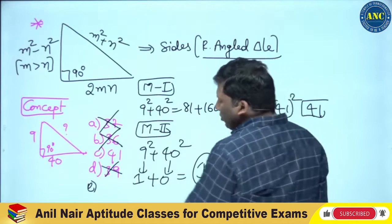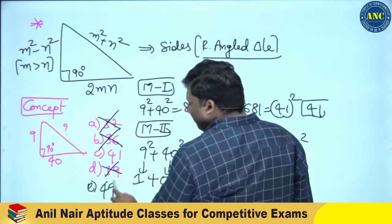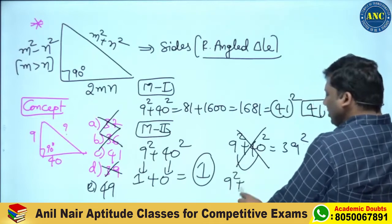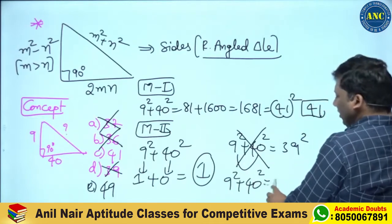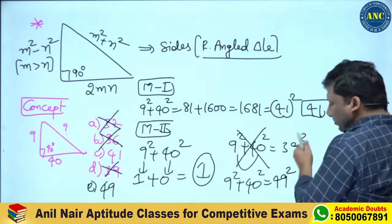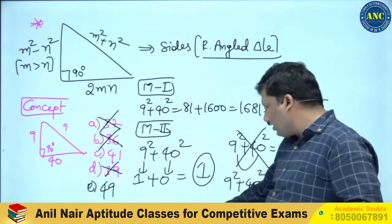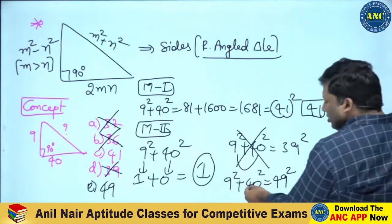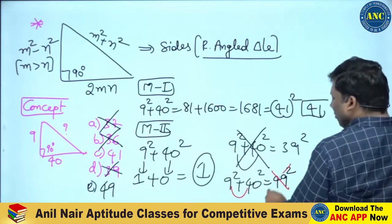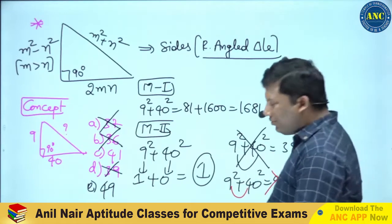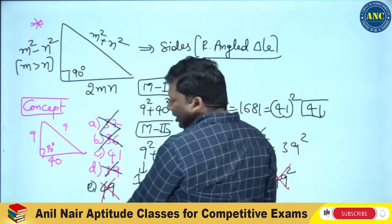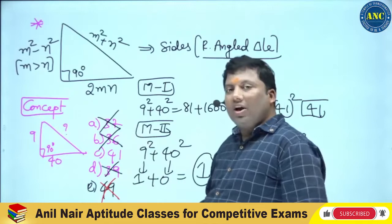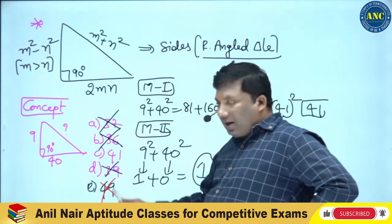Suppose the option were 49: 9² + 40² cannot equal 49². You are adding 9² to 40², which is a smaller value — how can you suddenly get a much larger value? Just a little mathematical common sense gives you the answer as 41.